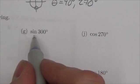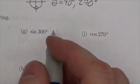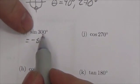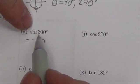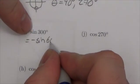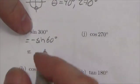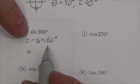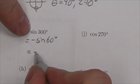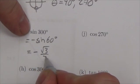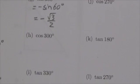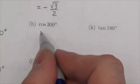Sine of 300 degrees: 300 is in quadrant 4, and sine is negative in quadrant 4. The reference angle is 360 minus 300 equals 60 degrees. From the unit circle or special triangles, sine of 60 is root 3 over 2, so sine of 300 equals negative root 3 over 2.